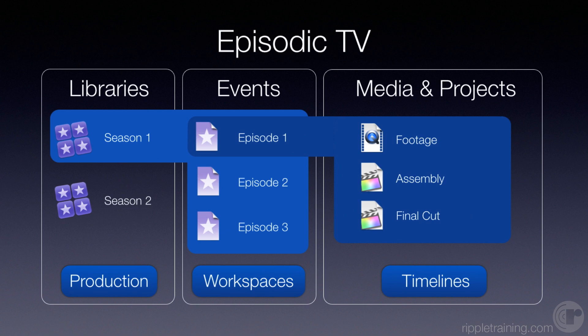Maybe you're doing an episodic television show, and of course episodic TV is organized by seasons. There are many seasons and each season is broken down by episode. The logic here is that each episode for each season would be its own event, and within that episode would be individual clips related to that episode, assembly, first cut, etc. You could have a huge library for the entire season, or you could decide to have a library just be one episode. In this example, we've got a library for the entire season and each event represents an episode of that season.